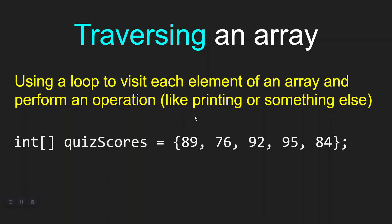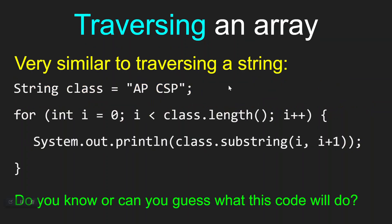So how can we use a for loop to go through an array of quiz scores and do something at each element? It turns out it's very similar to what we learned earlier with strings — very similar to traversing a string. Here we have a string called class set to APCSP. Then we have a for loop: for int i equals zero, as long as i is less than class.length, i++. And inside the for loop, we have a print statement printing class.substring from i to i plus one. Pause the video — do you know what this line of code will do? Write down your guess, then move forward in the video.